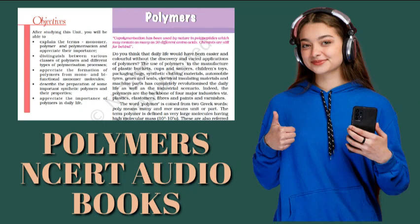Subtopic 15.1.1 Classification based on source. Under this type of classification, there are three subcategories. First, natural polymers. These polymers are found in plants and animals. Examples are proteins, cellulose, starch, some resins and rubber.